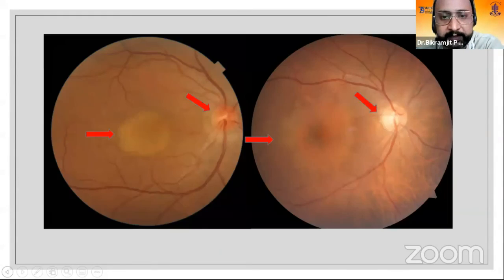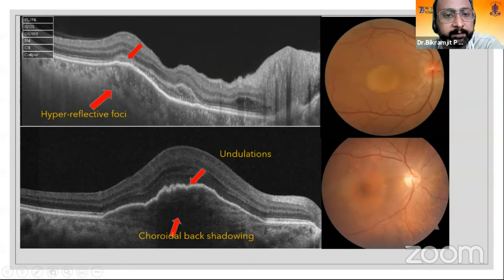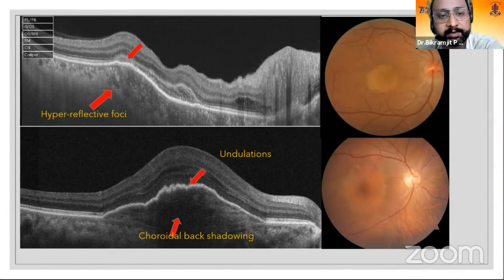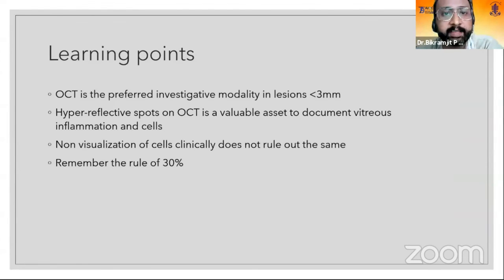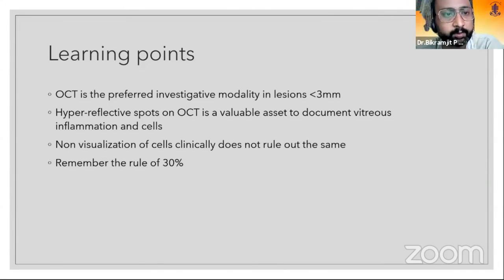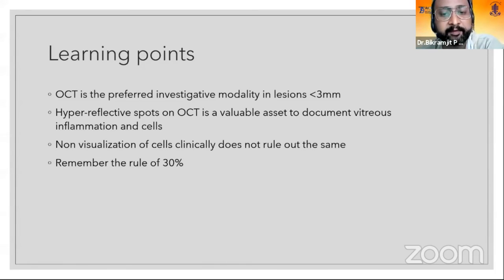In the second case, the OCT shows RPE undulation, and in the choroid at the back there is backshadowing — the lesion is present in the choroid causing undulation of the RPE and backshadowing. This turned out to be a choroidal metastasis from the lung. OCT is the investigation modality of choice for lesions less than three millimeters. Remember, vitreous cells may not be visible clinically — OCT is best to assess inflammation. And remember the rule of 30: 30% of metastases do not have a prior history of carcinoma.